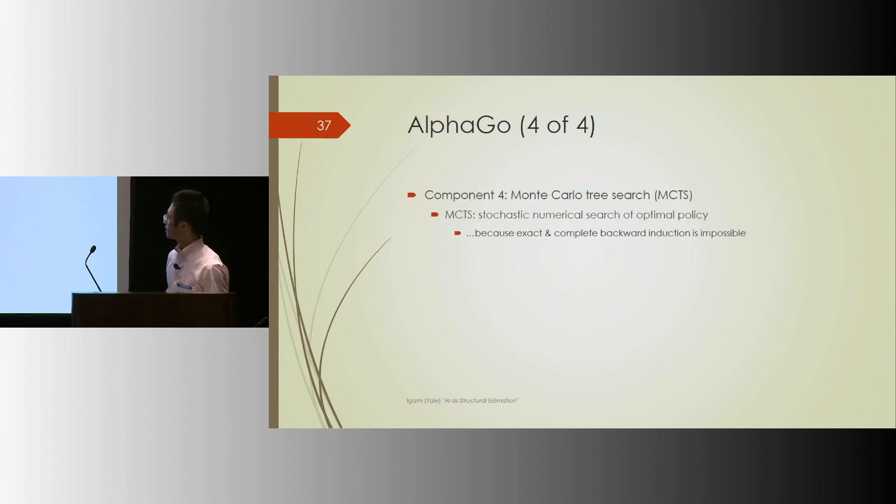The fourth component is less novel, the same Monte Carlo tree search, the thing people used since 2006. So that's AlphaGo two years ago, or Hotz-Miller maybe about 25 years ago.